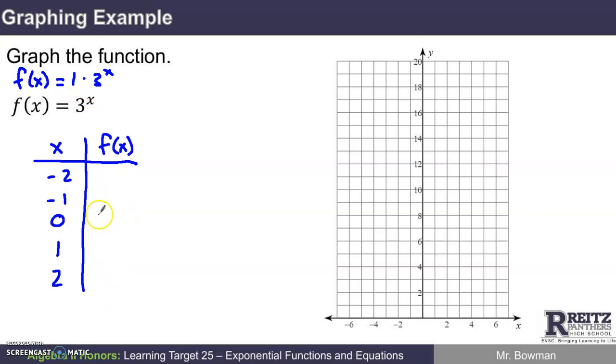If x is zero, I've got three to the zeroth power, and any non-zero number to the zero power is one. Three to the first power is three, and three to the second power is nine.